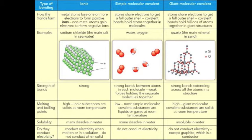Ionic bonds form when a metal reacts with a non-metal. Covalent bonds form between atoms of non-metal elements. The diagram summarises how the different types of bonds form and the properties of substances with the different types of bonding. Materials can be classified according to the type of bonding holding the atoms together.